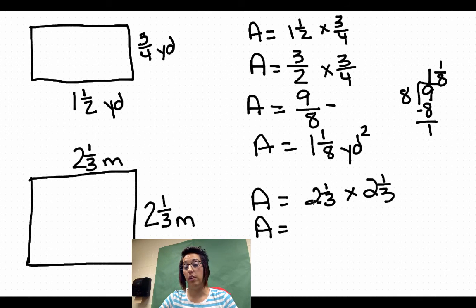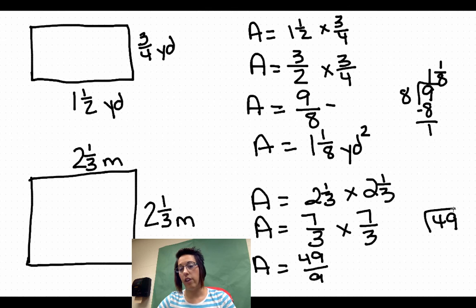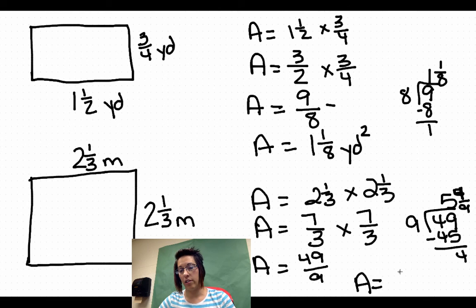Three times two is six plus one is seven. So we are doing seven-thirds times seven-thirds. Area equals 49 ninths. 49 divided by nine. Five would be 45. Subtract four. So five and four-ninths. It's always important to label. We have meters and they are squared because it is area.